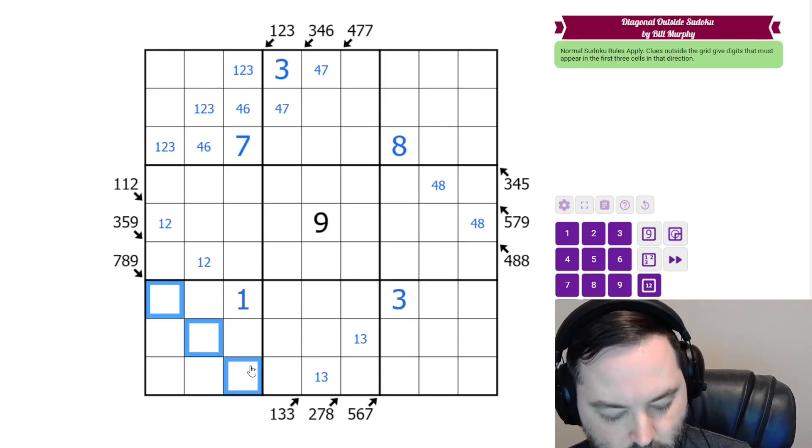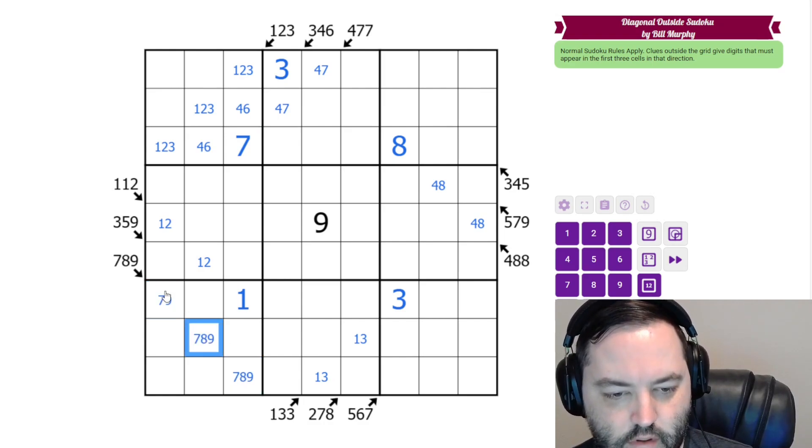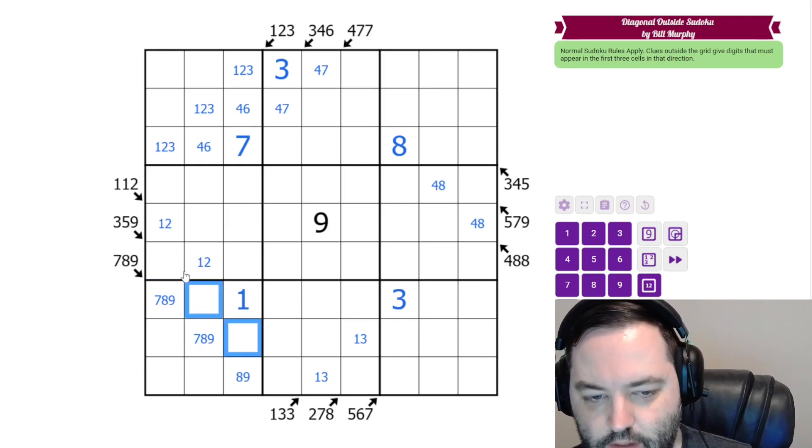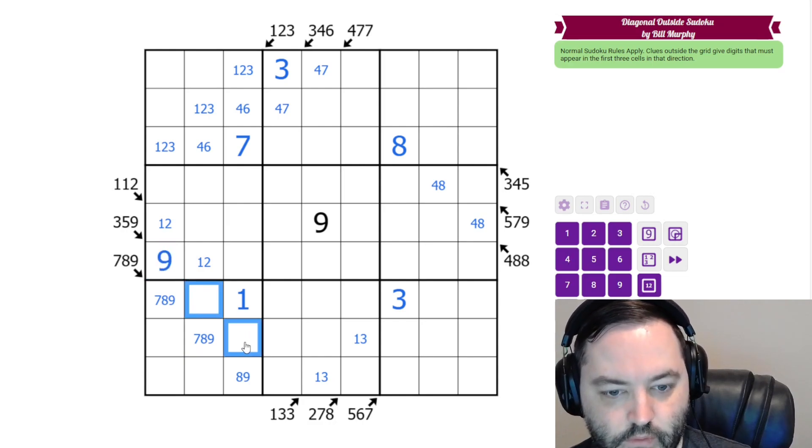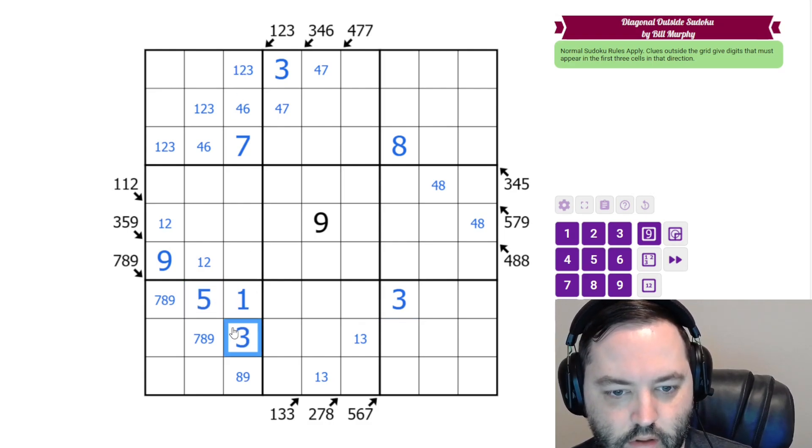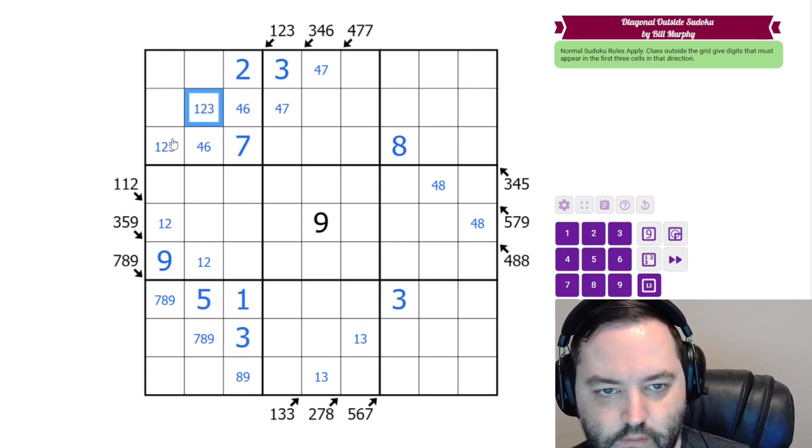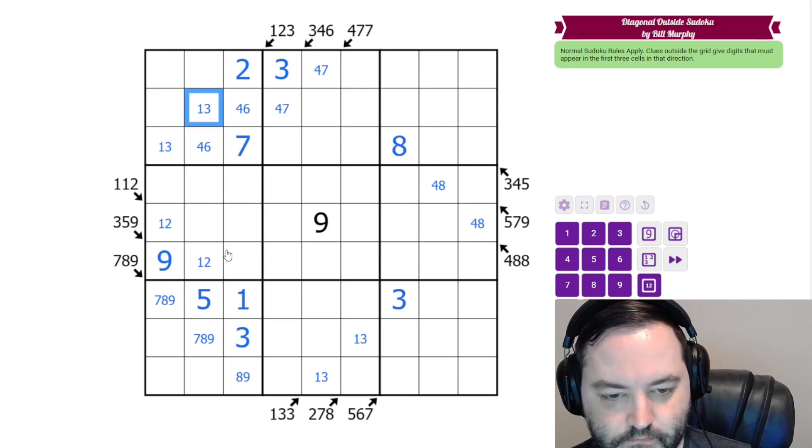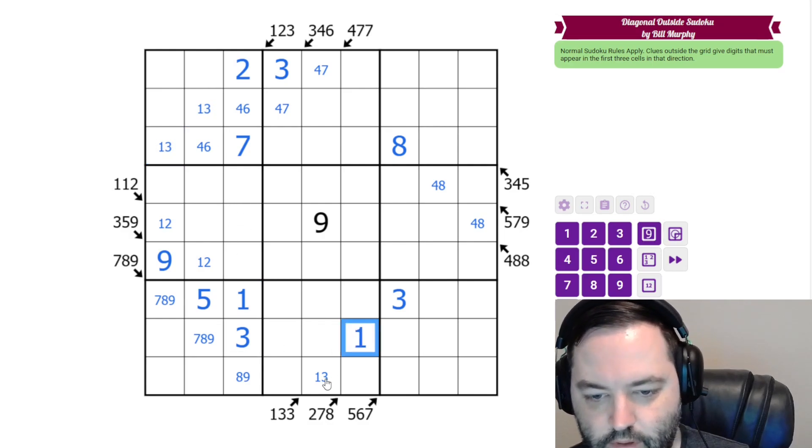These are 7, 8, 9. And these are 3, 5, 9, but the 9 can't go in this box. So these are 3 and 5. We have a 3 here as well, so that's 5, 3. The 1 and the 3 here gives us 2. And the 3 here gives us 1, 3.